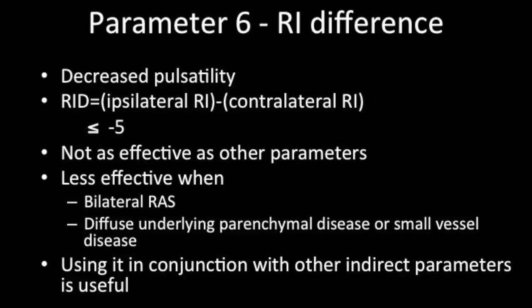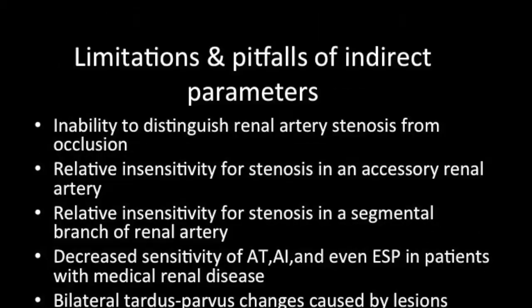The sixth parameter is the RI difference. It reflects decreased pulsatility seen in renal artery stenosis in the segmental artery. Normally the difference is less than minus 5, making it not a very effective criterion compared to other parameters. Using it in conjunction with other indirect parameters might be useful, but it is not frequently used in practice.